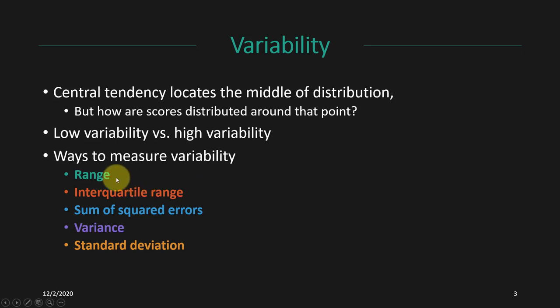One of the most common measures you're probably familiar with is the range, where we just look at the difference between the minimum score and the maximum score. That's useful because it tells us about the total spread of the data, but it doesn't really tell us about how data are clustered within that range or whether there's a greater density of scores around a certain point.